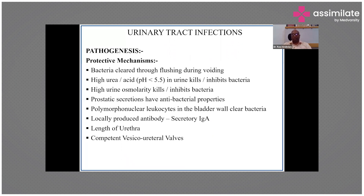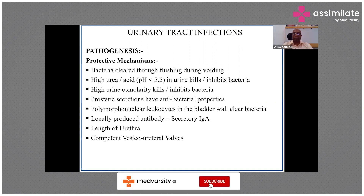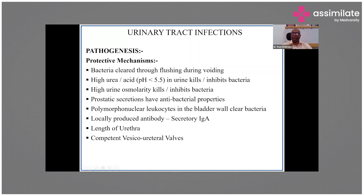Acidic urine — when pH is less than 5.5 — greatly reduces the chance of bacteria growing. High urine osmolality also inhibits bacteria. Prostatic secretions have antibacterial properties and prevent UTIs. The bladder wall itself has neutrophils that can clear bacteria independently. Secretory IgA, produced by all mucosal surfaces including the genitourinary tract, is also protective. The length of the urethra itself reduces infection risk — the longer the urethra, the lower the chance of infection, which is why males are less prone to UTIs than females.